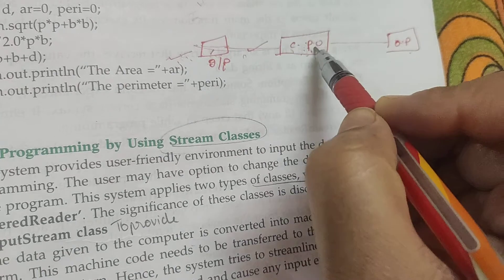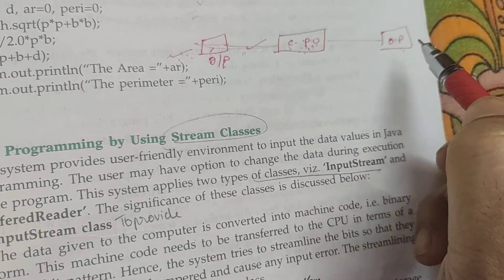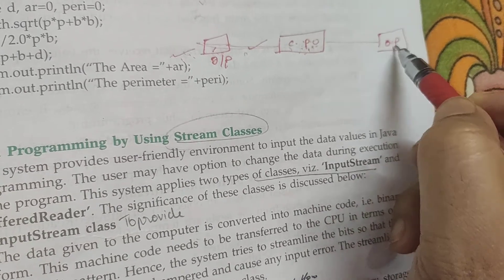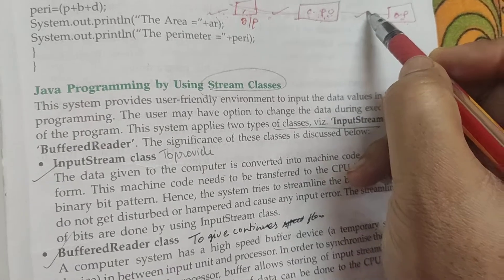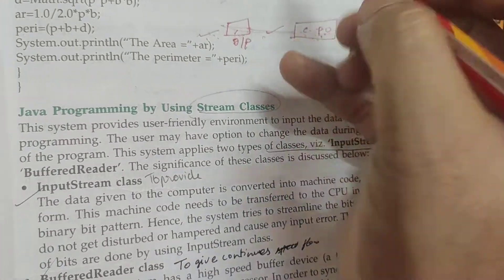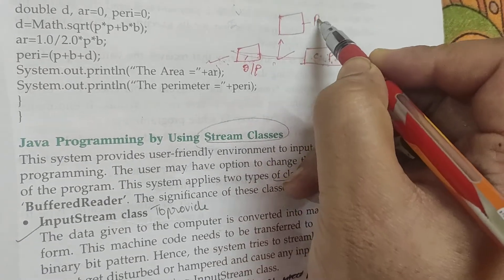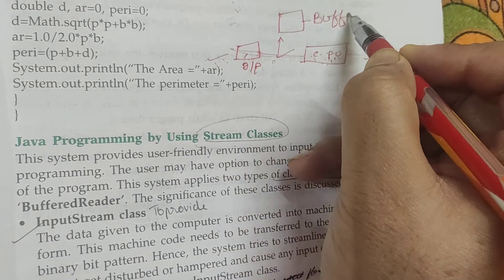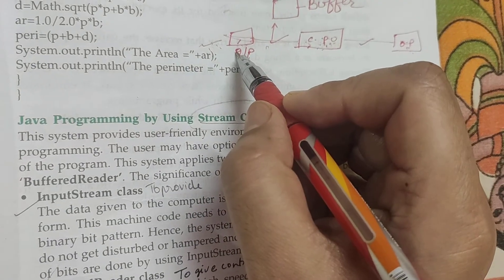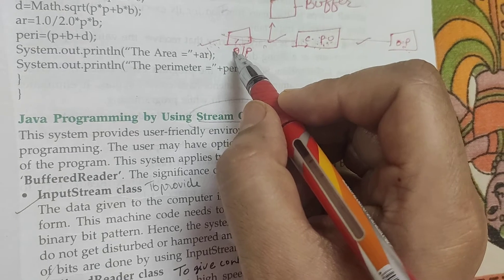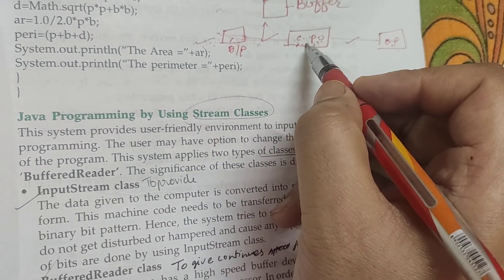And after processing, the stream of data which is going from CPU to the output or the console for display is called output stream. Now in between these two streams, what do we have? We have a buffer. What is in between these two? Buffer is between them. See, our CPU is very, very fast.